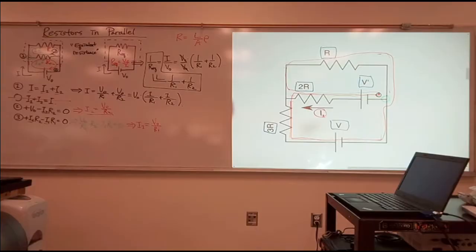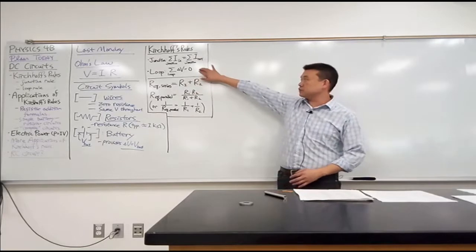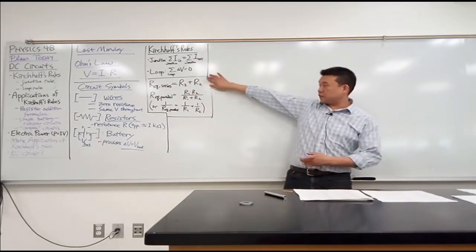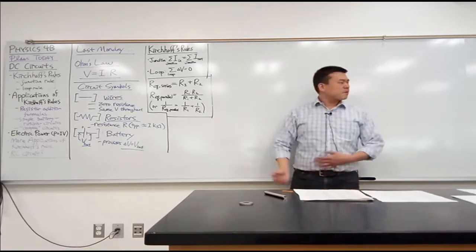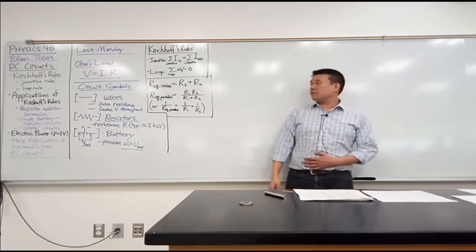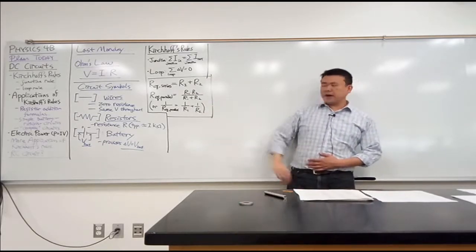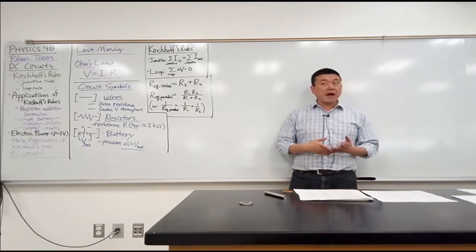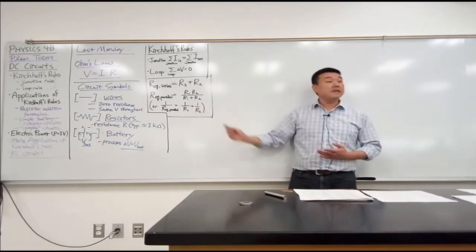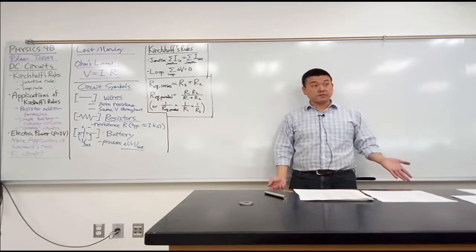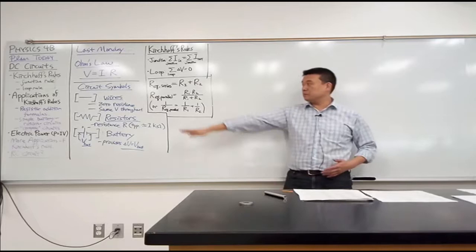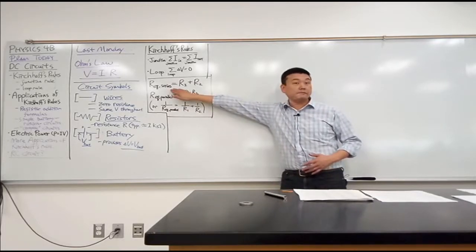You guys saw the application of Kirchhoff's rules in very simple cases, and we even derived these formulas. The truth is there are a lot of problems you can solve with these. And I hope it's intuitive for everyone how you would extend this in case you're adding more than two resistors. Like if you're adding three resistors in series, what do you think the modified version of this formula will be?